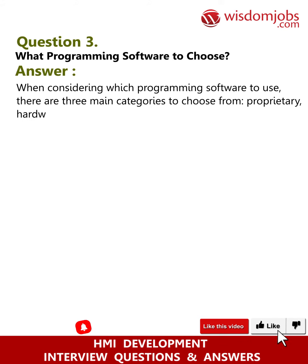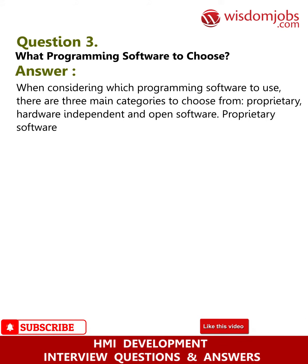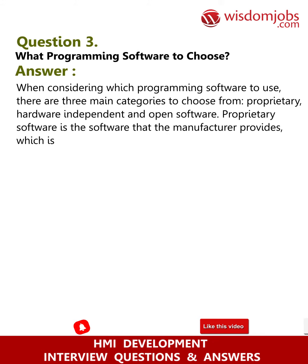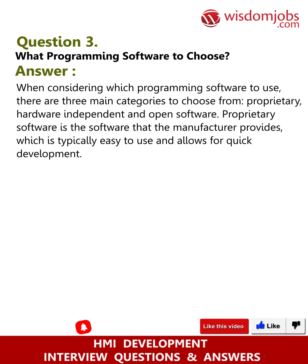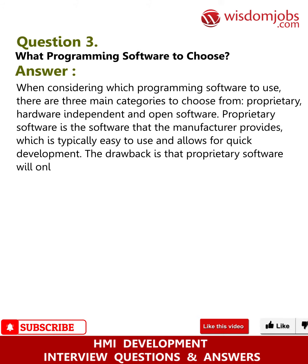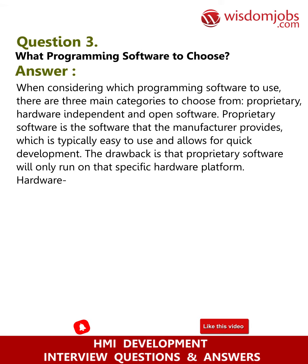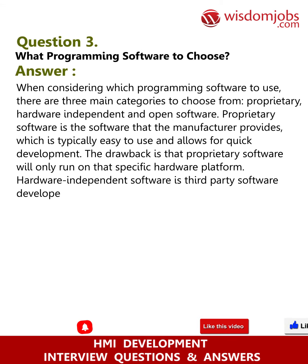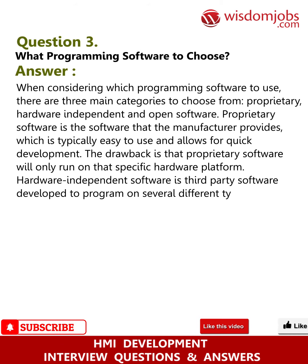Question three: What programming software to choose? Answer: When considering which programming software to use, there are three main categories to choose from: proprietary, hardware independent, and open software. Proprietary software is the software the manufacturer provides, which is typically easy to use and allows for quick development. The drawback is that proprietary software will only run on that specific hardware platform.